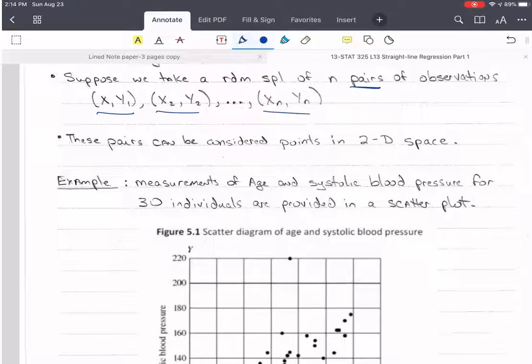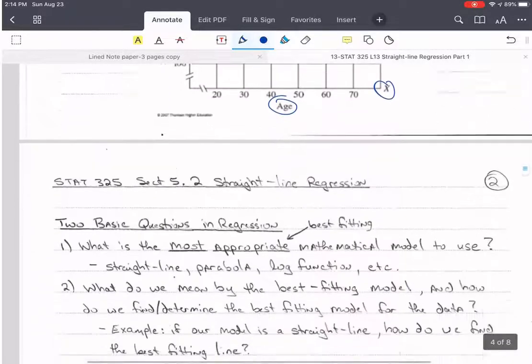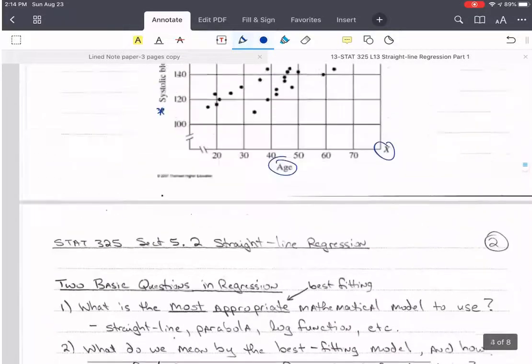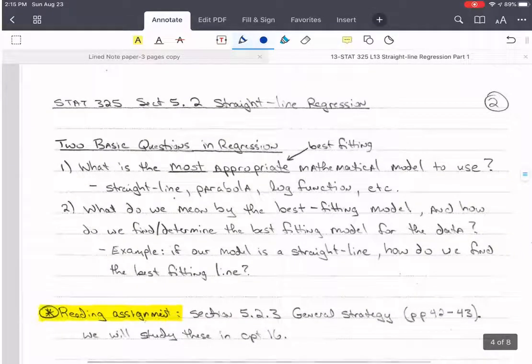And they can be considered points in 2D space, which is exactly what we've done here. These are the measurements of age and systolic blood pressure. Notice that age is down here, it's the predictor, this is x. And y is going to be the systolic blood pressure of these people. So a bunch of 30 people. You can see that there's an upward pattern. Also, notice the outlier here. And these pictures are taken from our textbook, so I've got to give credit where credit's due here.